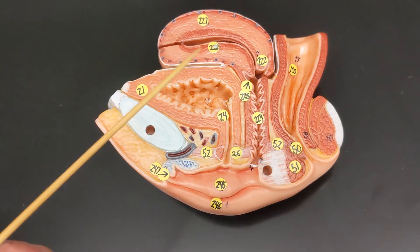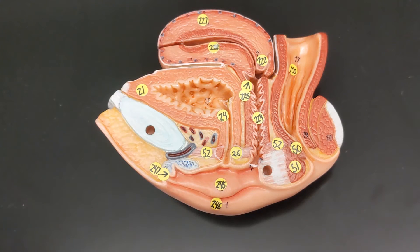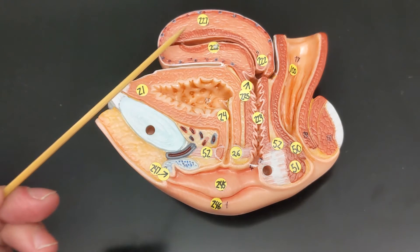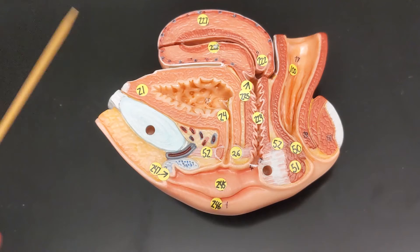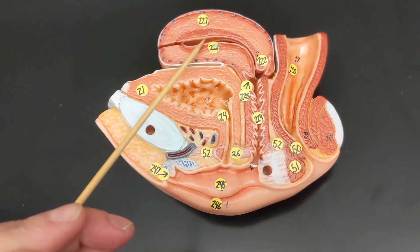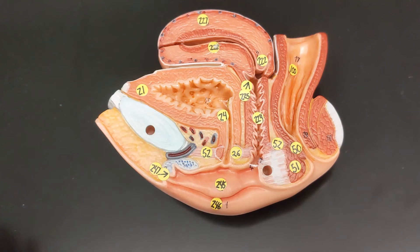So the endometrium has two sublayers to it, what are they and what is the purpose of them? So the deeper sublayer is the stratum basale. The innermost sublayer near the uterine cavity is the stratum functionalis. So the stratum functionalis sheds every month during menstruation, but the stratum basale remains and off of the stratum basale grows the new stratum functionalis.